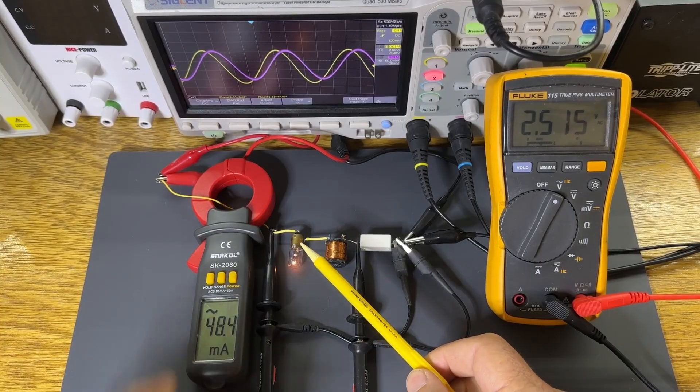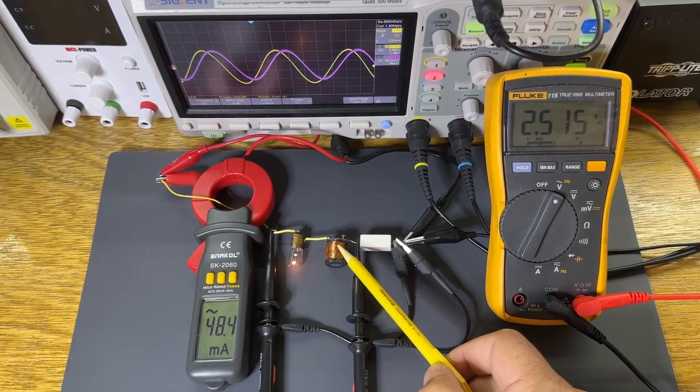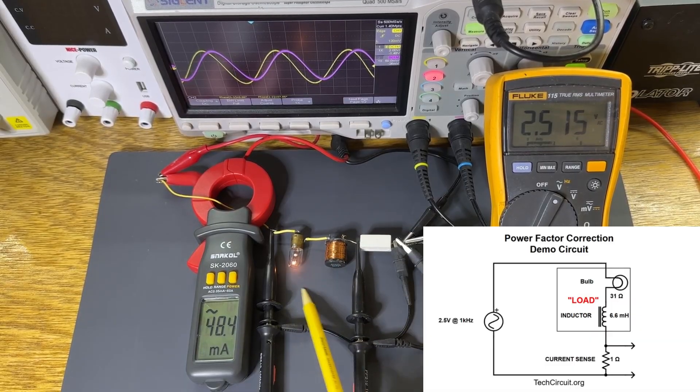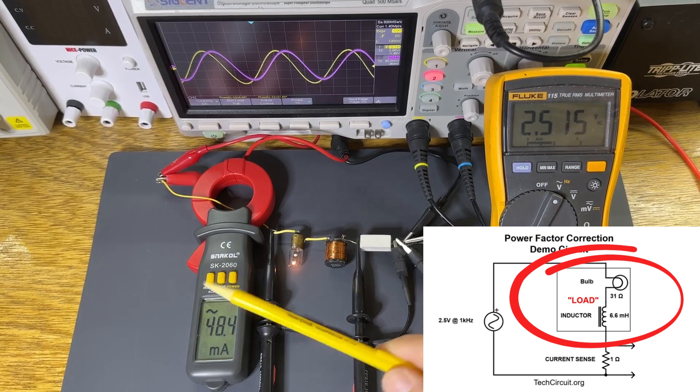But when there's an inductive component to the load, things change. Here's our demo circuit, an inductor and a light bulb in series, which again we'll collectively refer to as our inductive load.